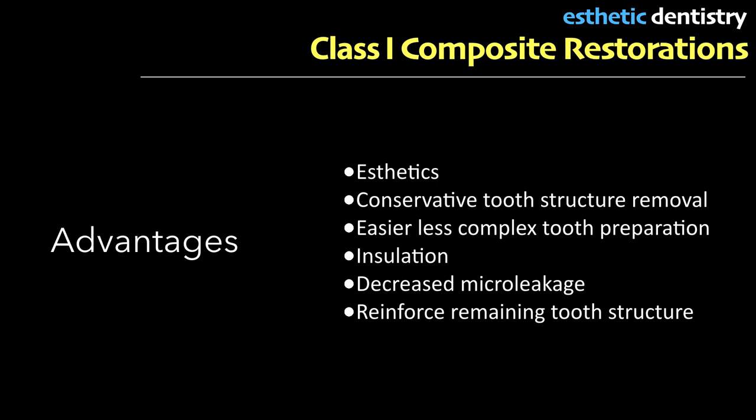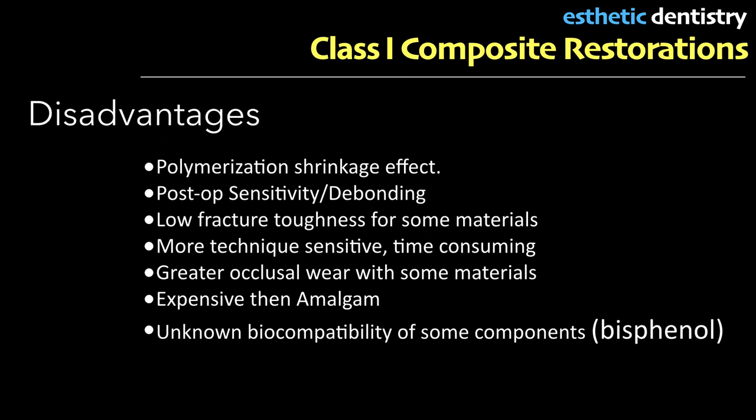Advantages of composite restoration: all composites are aesthetically pleasing, tooth-colored restorative materials. There is conservative tooth structure removal — we do not follow the concept of extension for prevention as described by G.V. Black; we just remove the lesion part only. Preparation is comparatively easier and less complex. It provides insulation, decreases microleakage, and the bonding system offers added benefits: decrease in recurrent caries, decrease in post-operative sensitivity, increase in retention, and increase in strength of the remaining tooth structure.